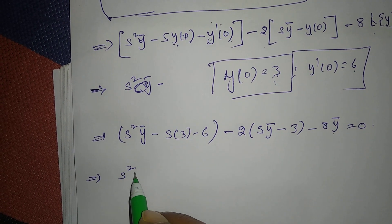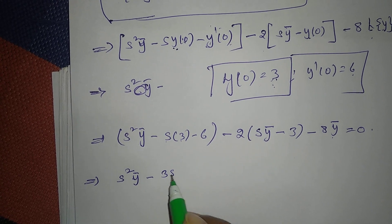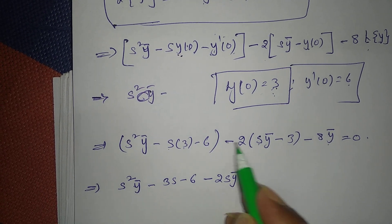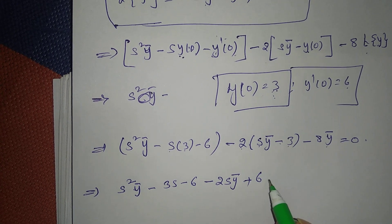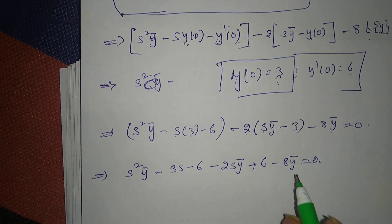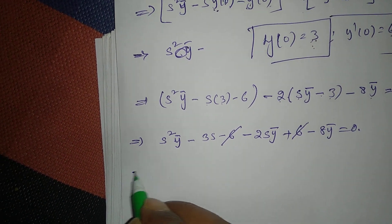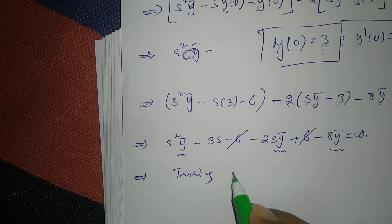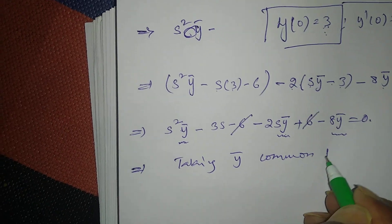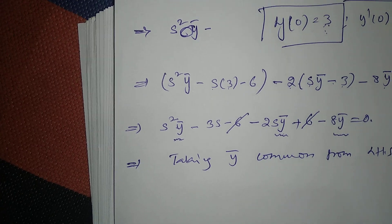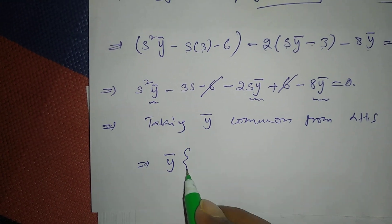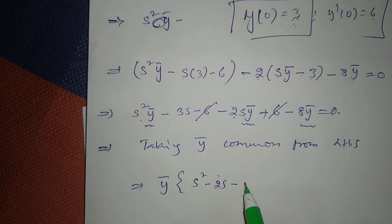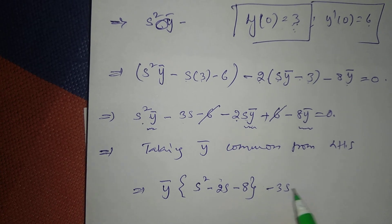Removing the brackets: S²·ȳ - 3S - 6 - 2S·ȳ + 6 - 8·ȳ = 0. Notice that -6 and +6 cancel. Taking ȳ common from the left-hand side gives ȳ·(S² - 2S - 8) - 3S = 0.